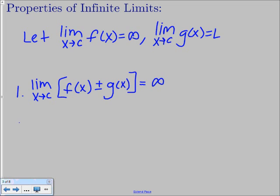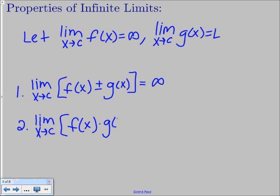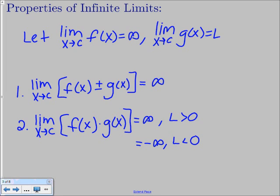The second property deals with multiplication: the limit as x approaches c of f of x times g of x can have two different answers depending on L. It's going to be positive infinity when L is greater than 0, or negative infinity when L is less than 0.